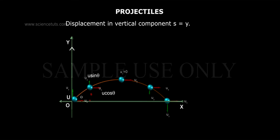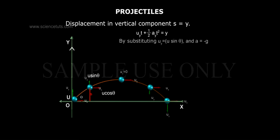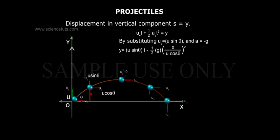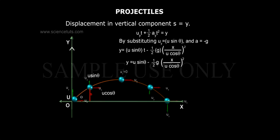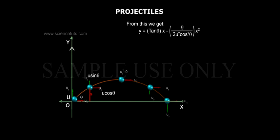Displacement in the vertical component: S is equal to y. Using the equation u_y·t + (1/2)·a_y·t² = y, and substituting u_y = U sinθ and a = −g, we get y = U sinθ·t − (1/2)·g·(x / U cosθ)². Simplifying, y = U sinθ − (1/2)·g·(x / U cosθ)², which gives y = tanθ·x − (g / 2U² cos²θ)·x².